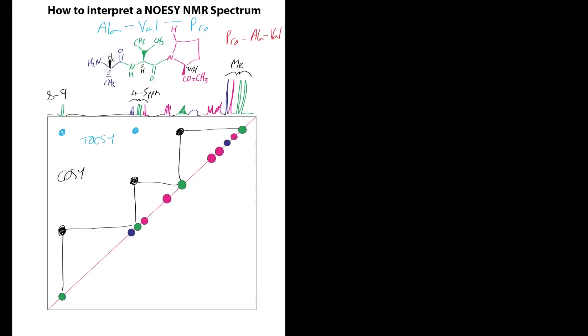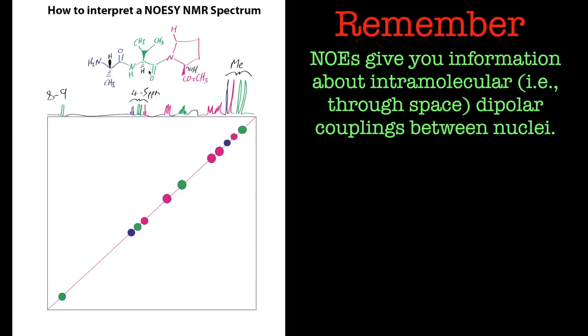If we want to prove that alanine is connected to valine, which is connected to proline, the easiest thing to do would be have a look at this proton here. If we want to see if this alanine is connected to this valine unit in this particular molecule, obviously this can apply to any structure, any molecule. We're just looking for intermolecular couplings.